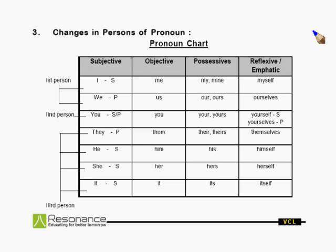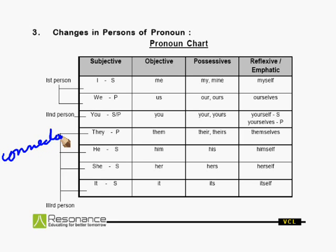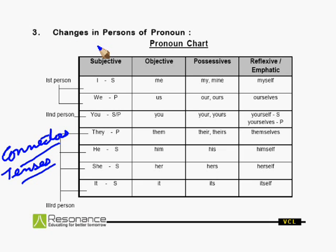Now, look over here. So far, we have discussed two rules: the rules of the connectors and the rule of the tenses. Both are important. Now, equally important is this third rule — how to change persons.